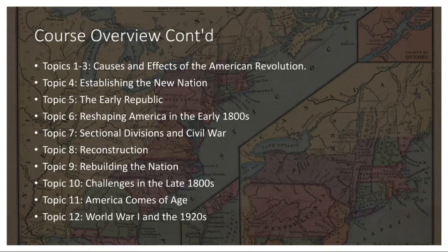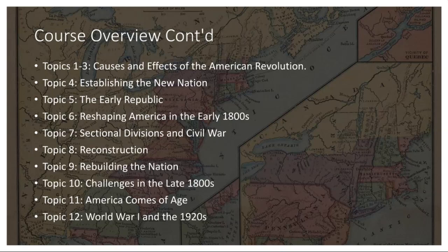Topic 6 covers Reconstruction. Following the Civil War, the nation faced the immense challenge of Reconstruction. Efforts were made to rebuild the South and ensure the rights of newly freed slaves. The Reconstruction Amendments — the 13th, 14th, and 15th — sought to abolish slavery, grant citizenship, and secure voting rights for African Americans. However, Reconstruction faced resistance from Southern states, and the process was complicated by political maneuvering and compromises.